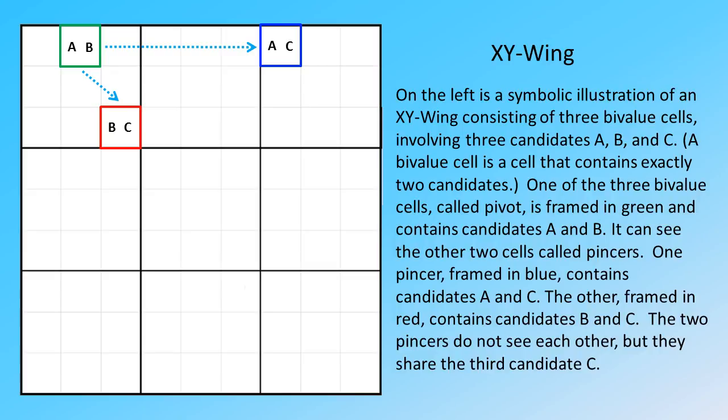One pincer, framed in blue, contains candidates A and C. The other, framed in red, contains candidates B and C. The two pincers do not see each other, but they share the third candidate C.